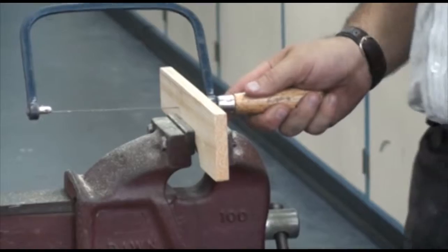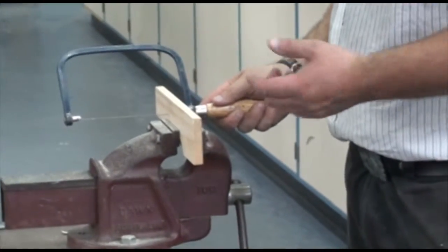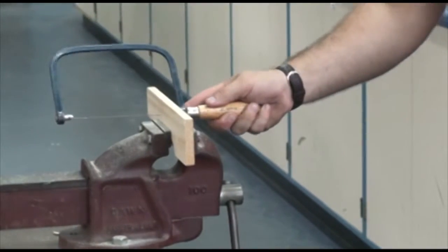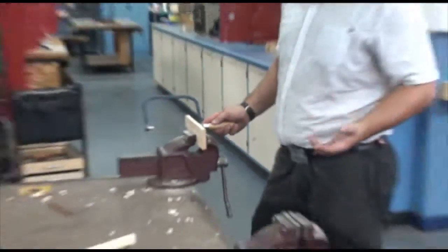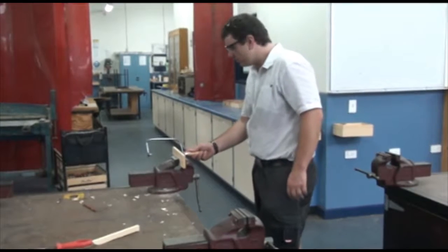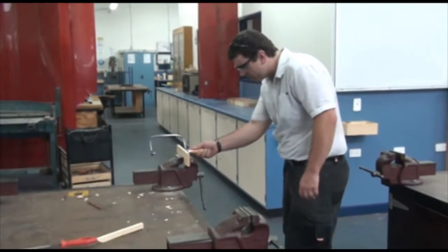Now when I'm cutting, you'll notice that I'm using the full length of this blade. A lot of students when they cut, they'll be cutting like that. Now that increases the chance of snapping the blade. It increases your workload. You've got to push a lot harder, and it doesn't make the job easier. If I use the full length of the blade, I can cut very quickly.